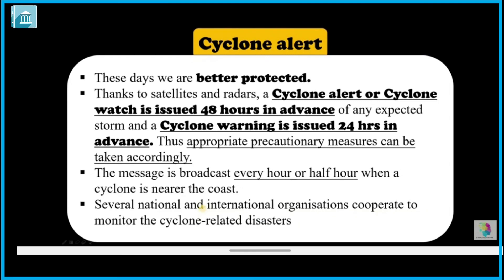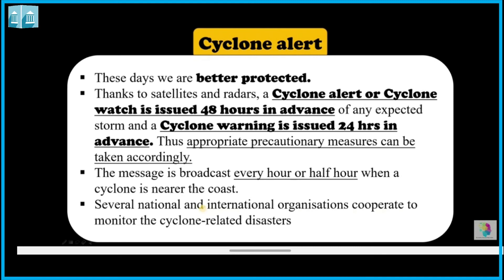These days we are better protected because with satellites and radar, a cyclone alert or cyclone watch is issued almost 48 hours in advance for any expected storms, and a cyclone warning is issued 24 hours in advance so we can take all precautionary measures. This message is broadcast every hour and half hour when a cyclone is near the coast. Several national and international organizations cooperate to monitor cyclone-related disasters.